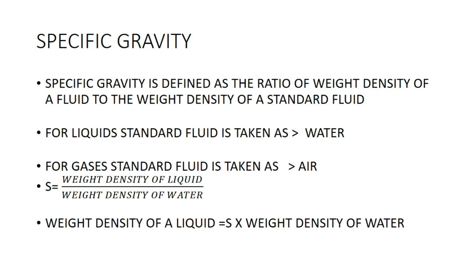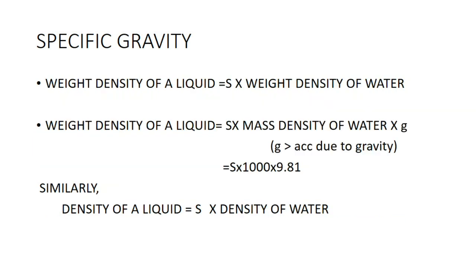Specific gravity is defined as the ratio of weight density of a fluid to weight density of a standard fluid. In the case of liquids, the standard fluid is taken as water, whereas in the case of gases, the standard fluid is taken as air. Hence the specific gravity S equals weight density of a liquid divided by weight density of water. Specific gravity is introduced to relate the weight density of any liquid to that of water. So if we know the specific gravity of any liquid, we can directly calculate its weight density by multiplying the specific gravity with the weight density of water. Hence the weight density of a liquid equals the product of specific gravity and weight density of water, which can be expressed as specific gravity into 1000 into 9.8.